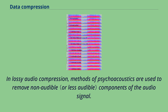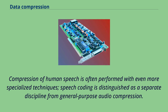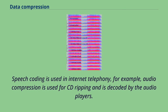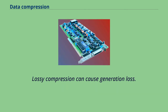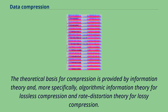In lossy audio compression, methods of psychoacoustics are used to remove non-audible components of the audio signal. Compression of human speech is often performed with even more specialized techniques. Speech coding is distinguished as a separate discipline from general-purpose audio compression. Speech coding is used in internet telephony. Audio compression is used for CD ripping and is decoded by audio players. Lossy compression can cause generation loss. The theoretical basis for compression is provided by information theory and, more specifically, algorithmic information theory for lossless compression and rate-distortion theory for lossy compression.